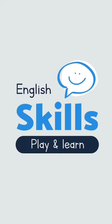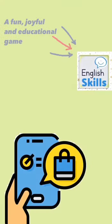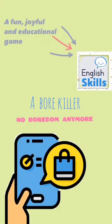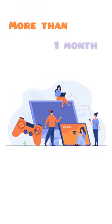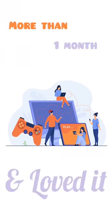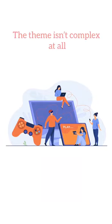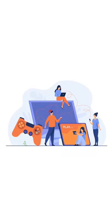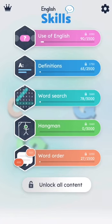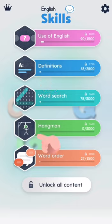First of all, the game is called English Skills. It's not a regular game, it's a bar killer. I've been playing it for over a month and I loved it, especially because it contains five categories. Also, the theme is not that complex — it's very simple, even kids can play it. The first is Use of English, the second Definitions, the third Word Search, the fourth Hangman, and the fifth is Word Order.